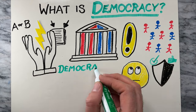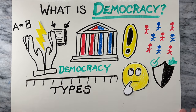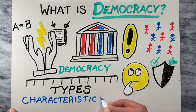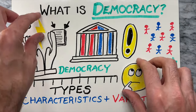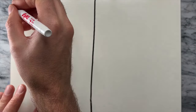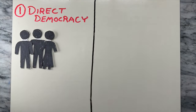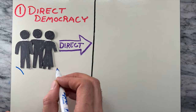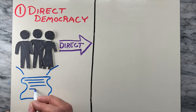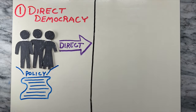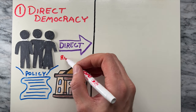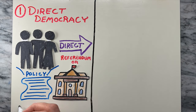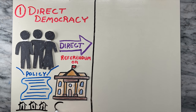There are several different types of democracy, each with its own characteristics and variations. Let's take a brief look at each type. First, there's direct democracy. In a direct democracy, citizens have a direct role in making decisions. They participate in policymaking, often through referendums or town hall meetings. This system is most practical in small communities or on specific issues.